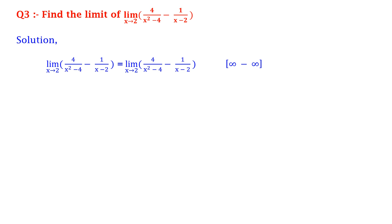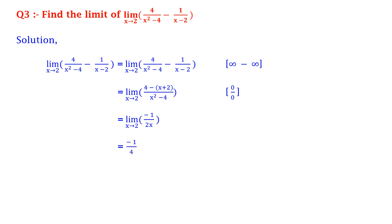So we first simplify it, which gives us limit x tends to 2 of (4 - (x + 2))/(x² - 4), again 0 upon 0. So we apply L'Hôpital's rule and we get limit x tends to 2 of minus 1 (differentiation of numerator) upon 2x (differentiation of denominator), which is equal to minus 1 by 4.